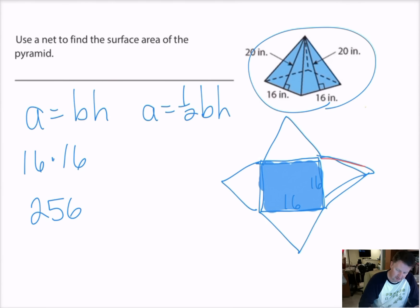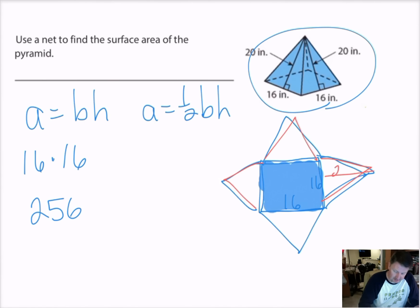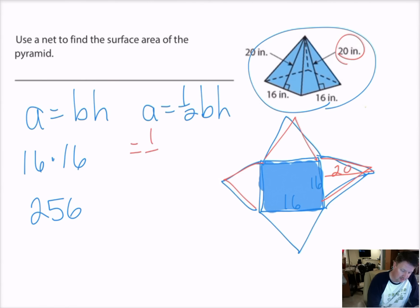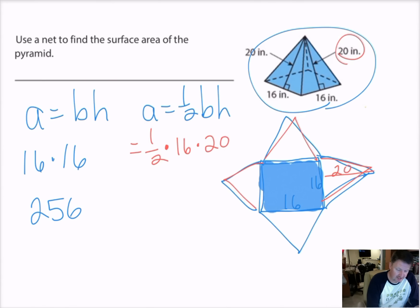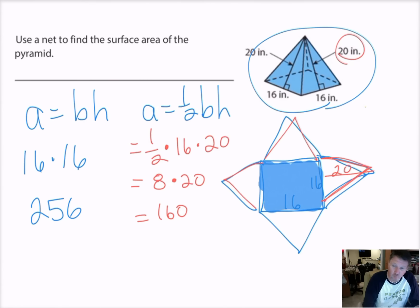Now let's look at the triangles. I have a height of 20 inches on the triangle — that's important. So area equals one-half times the base, which is 16, times the height, which is 20. I multiply one-half times 16 to get 8, then 8 times 20, and I get 160. So the area of one triangle is 160 square inches.